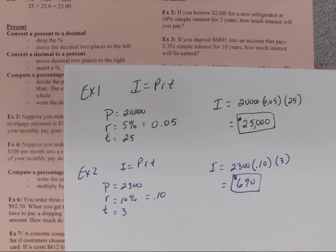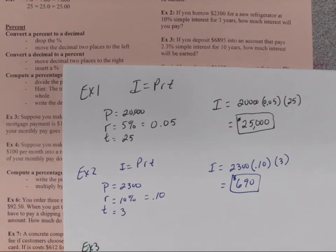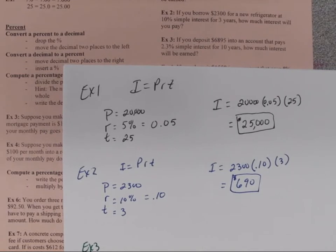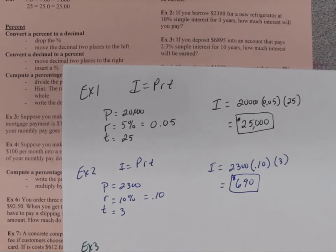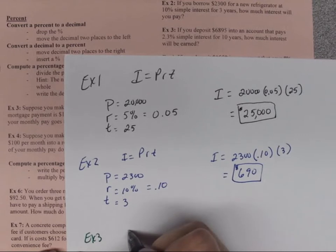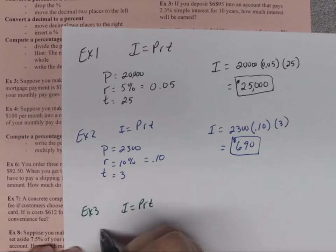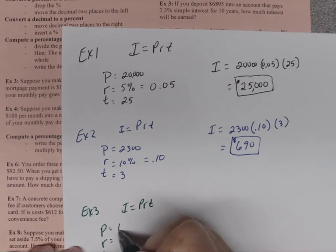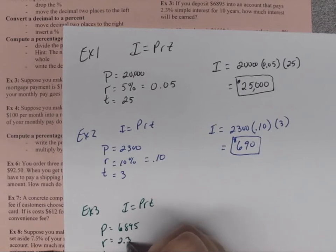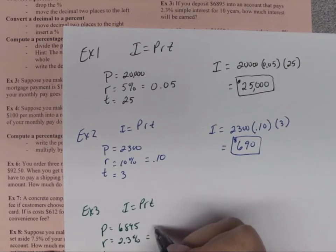Alright, example three. If you deposit $6,895 into an account that pays 2.3% simple interest for 10 years, how much interest will be earned? So again, we're looking at I is equal to PRT. So our P and our R and our T is what we need to know. We're depositing $6,895, so that's our principal, the account pays 2.3%, which will become 0.023 as a decimal, and it's for 10 years.